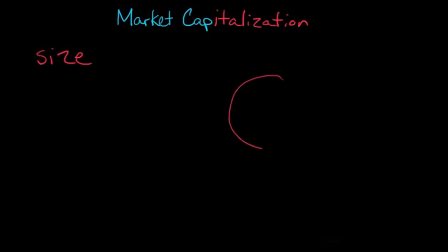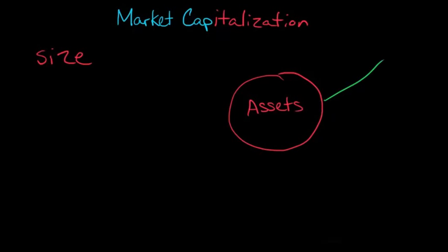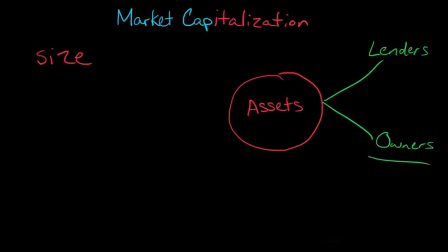Let's picture the firm as a pool of assets. We've got these assets, and then we've got claims against these assets. Lenders have claims against those assets, and we can think about that as the liability side of the balance sheet. Then we have owners, or stockholders, shareholders — owners have claims against the assets.